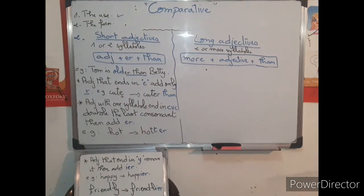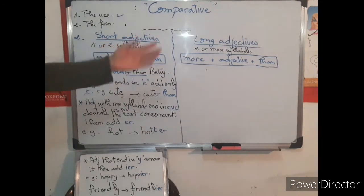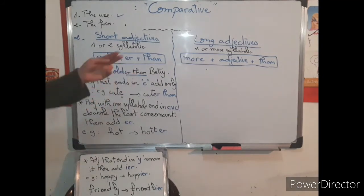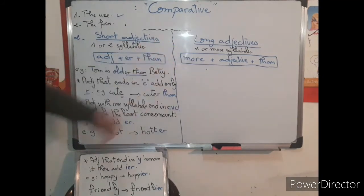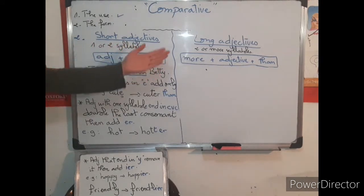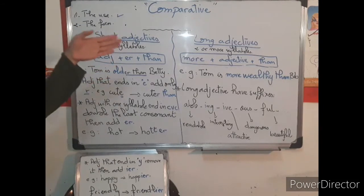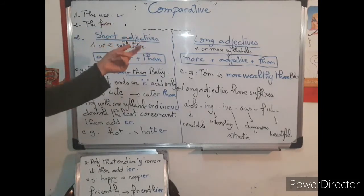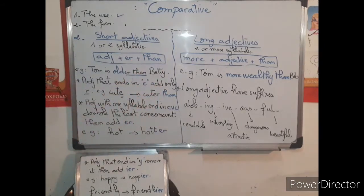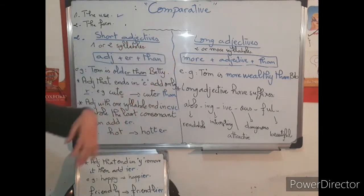Now let's move to the second type: long adjectives. Two or more syllables gives a long adjective. The general rule is: more + adjective + than. For example, 'Tom is more wealthy than Bob' — 'wealthy' meaning rich. You can also say 'richer than Bob' or 'more wealthy than Bob.'